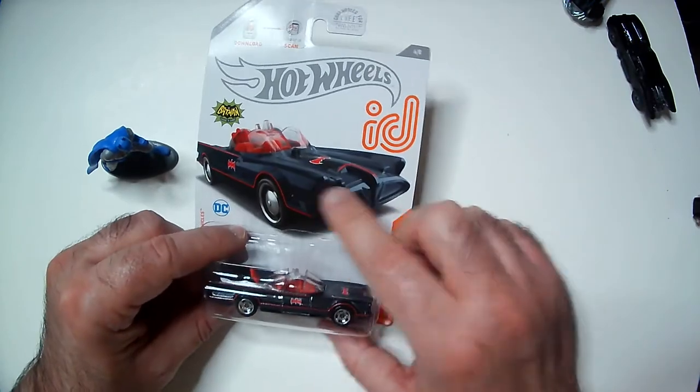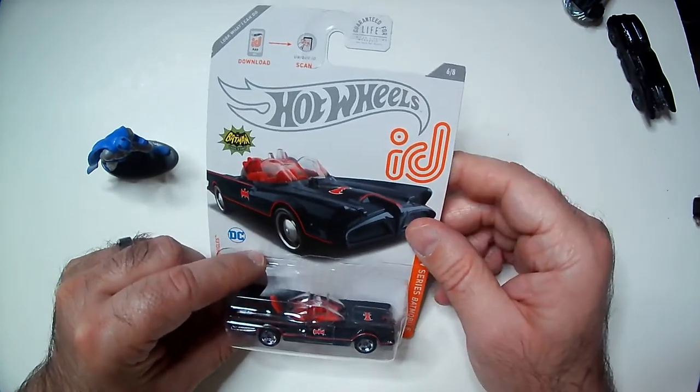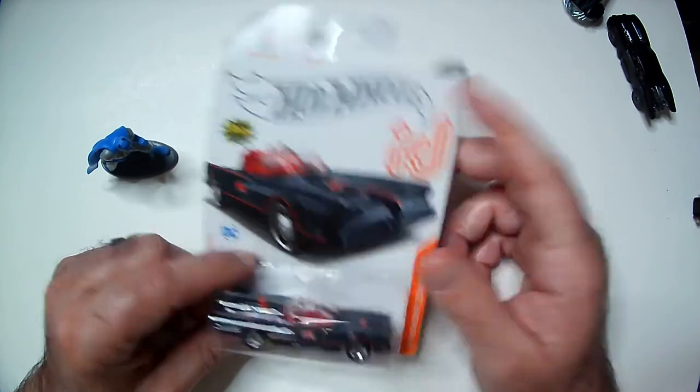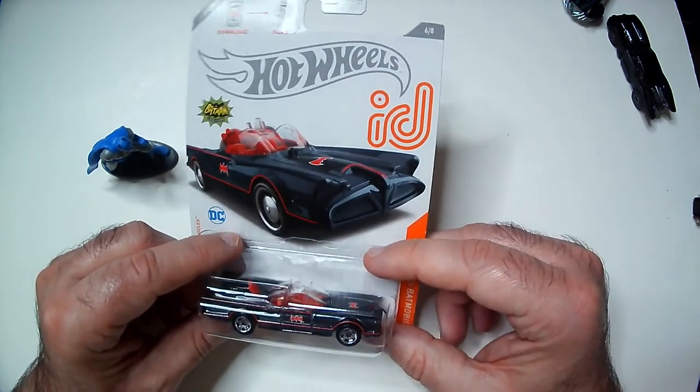So the art on the card is a little bit bigger and with the white background I think pops out a little bit better. Again, the 1966 Batmobile ID version, which is the same. I think it has a scan thing at the bottom or whatever.